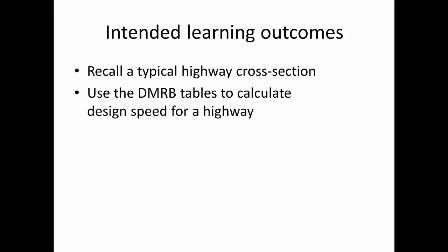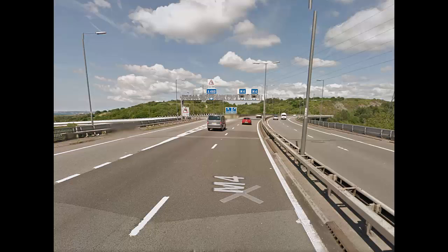Underpinning all of this is the idea of design speed — how fast is reasonable for a given road — and that's what we're looking at this week. This is actually the M4 on the approach to Fabian Way, on the approach to the University. If you take a cross section across the M4 at this point, we can compare it to a cross section for a typical highway.